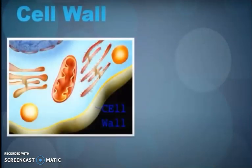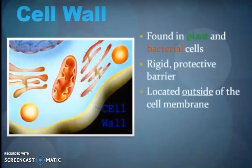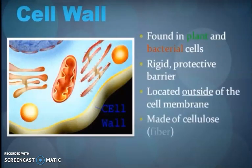The cell wall is found in plant and bacterial cells. It provides rigidity and protection to the cell, is located outside of the cell membrane, and is made up of cellulose. It is absent in animal cells.